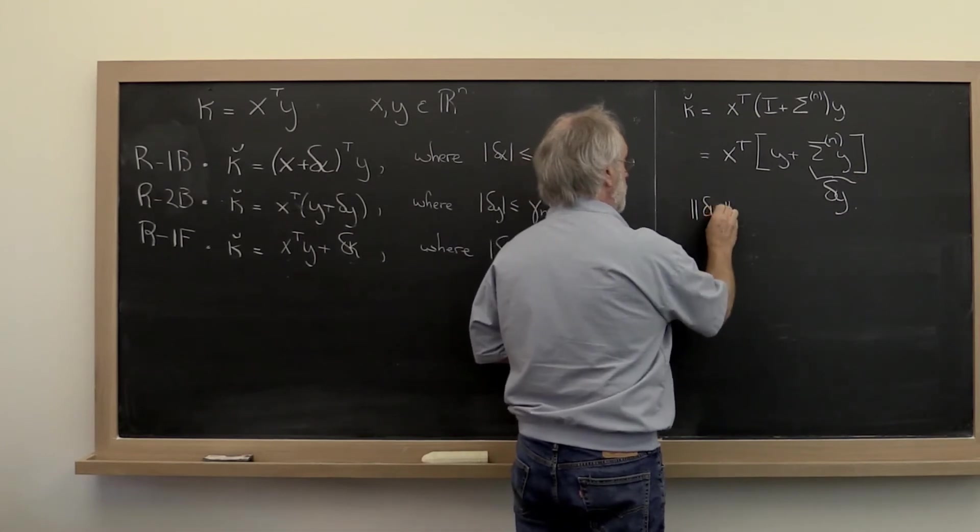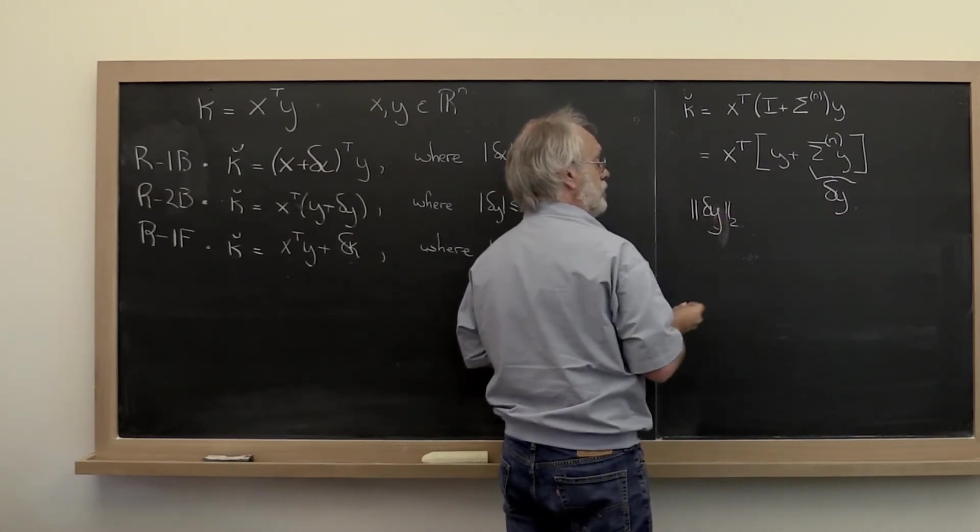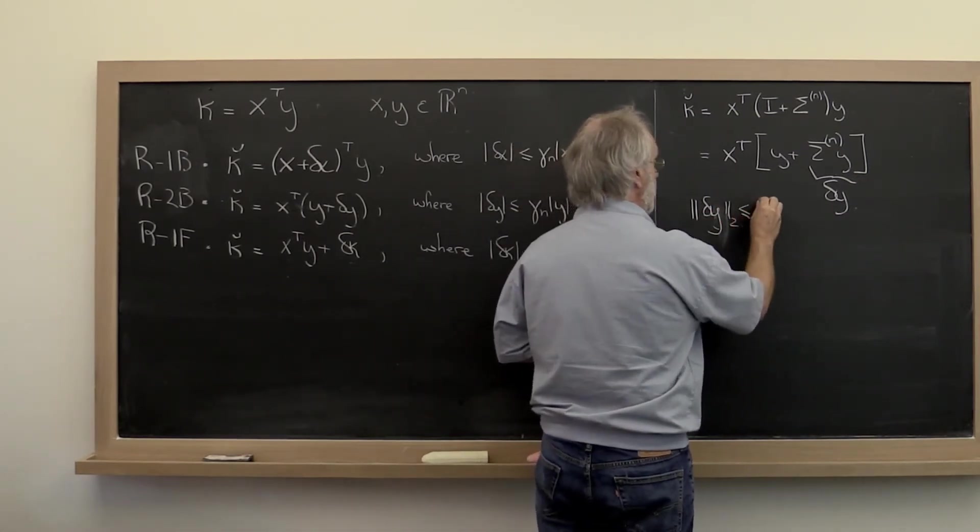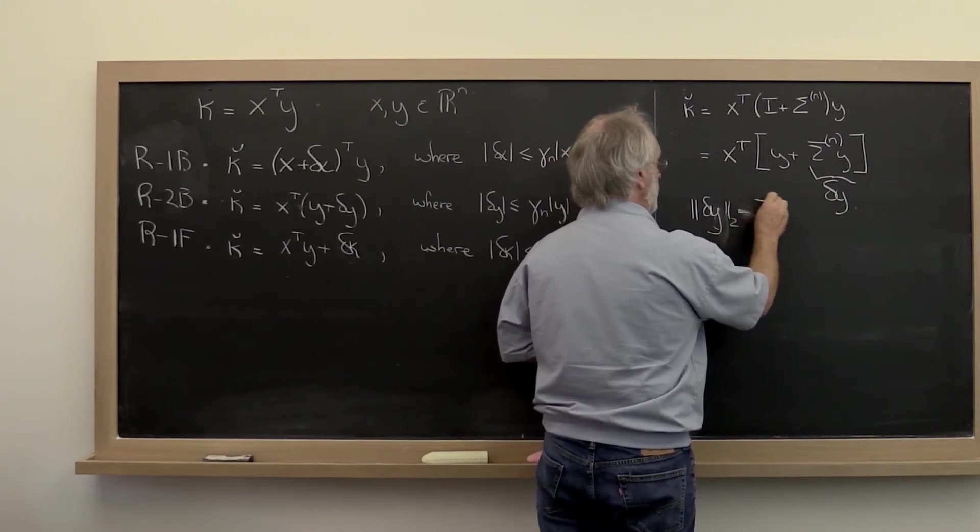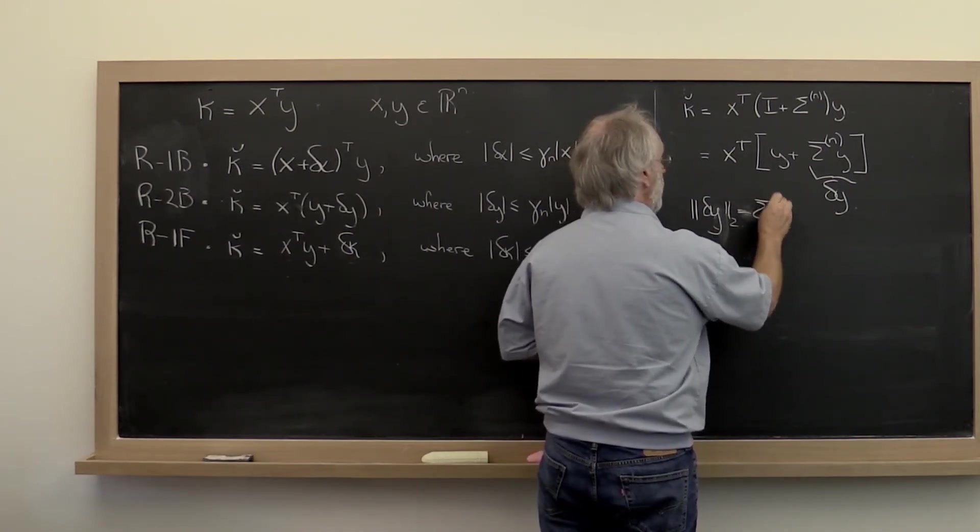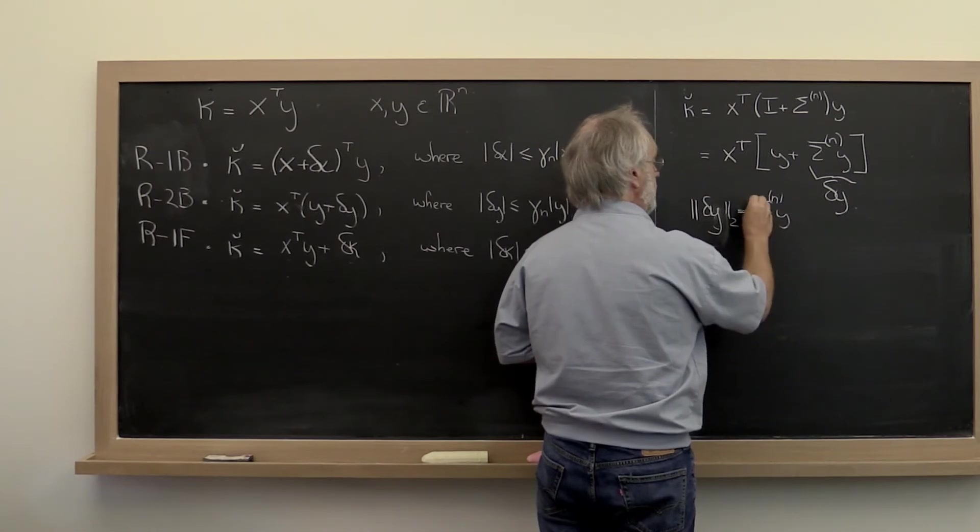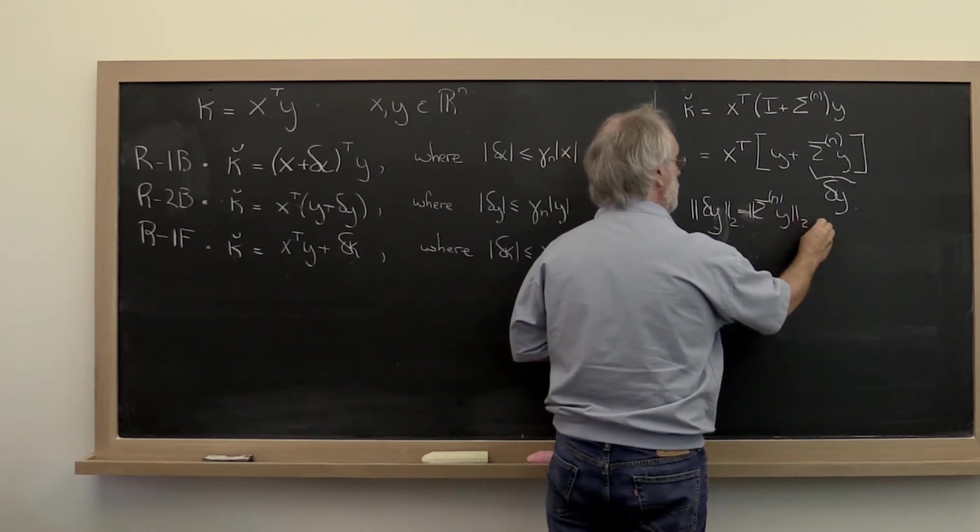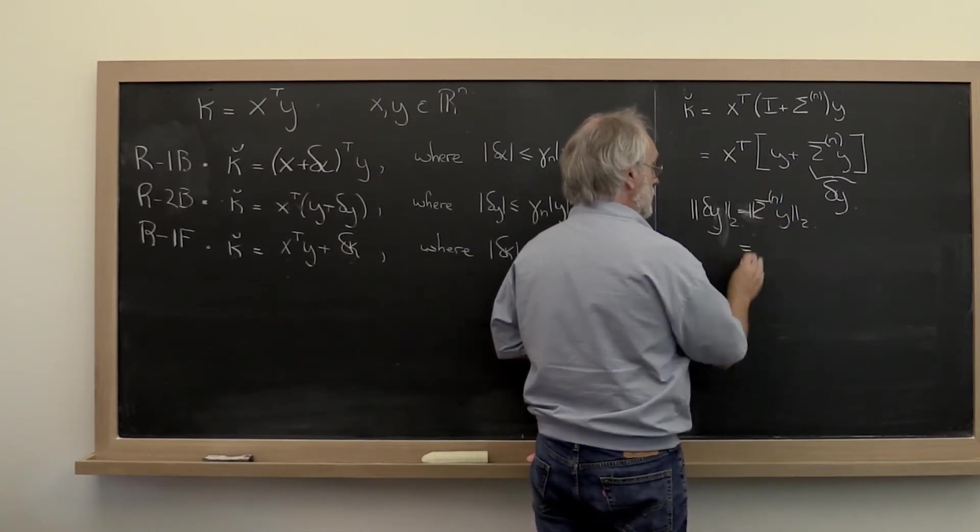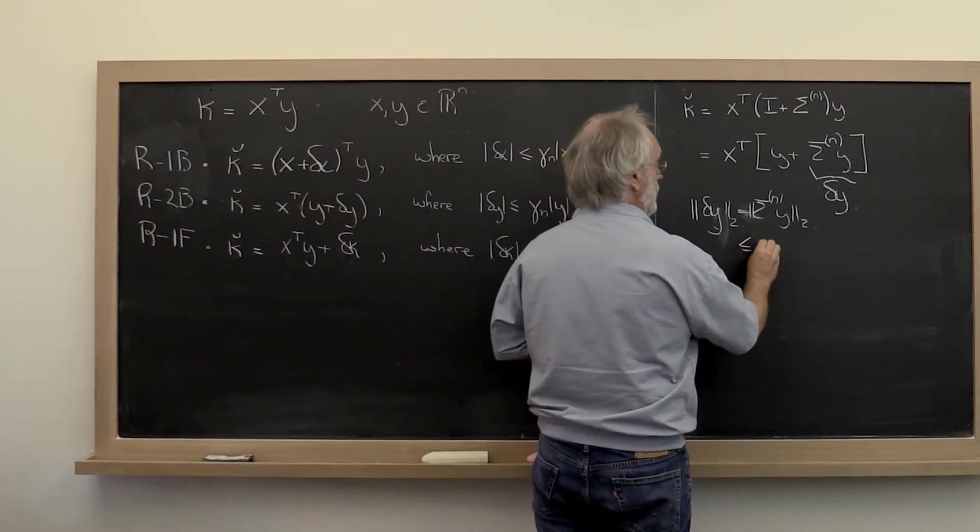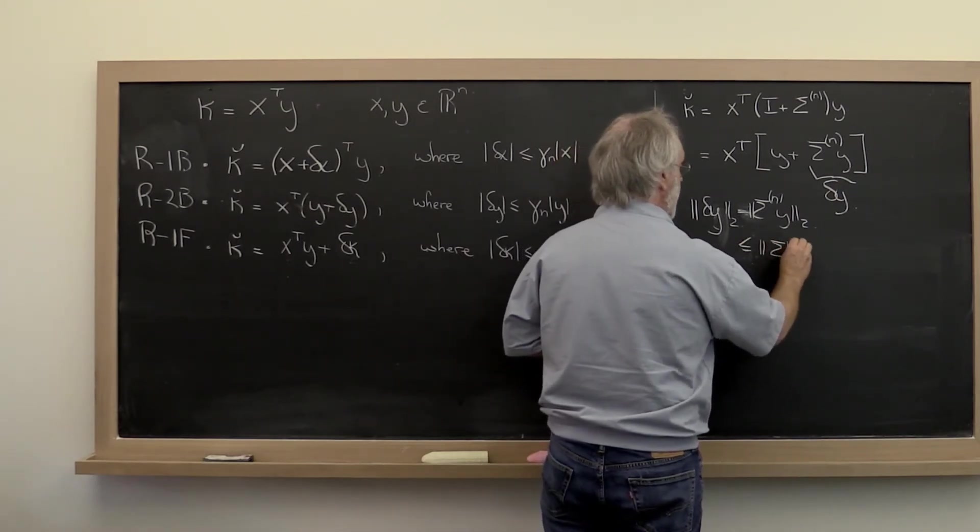Remember we like to have this touched. It's equal to sigma n times y in 2-norm. And that then is bounded by the 2-norm of this diagonal matrix.